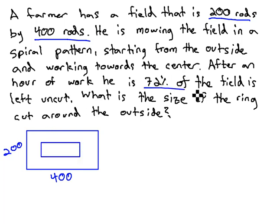72 percent of the field is left uncut. So 72 percent is in the center of that rectangle, and we want to know what is the size of the ring he has cut around the outside.